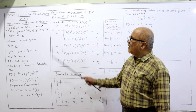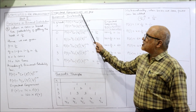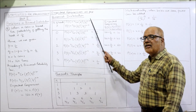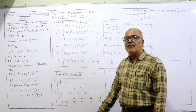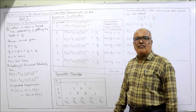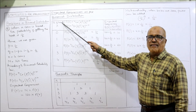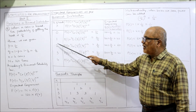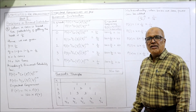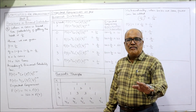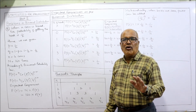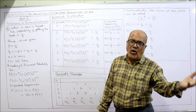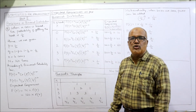Now we find the expected frequency as per binomial distribution by making a table. The number of heads in a throw goes from zero to four: zero heads, one head, two heads, three heads, or all four coins showing head.